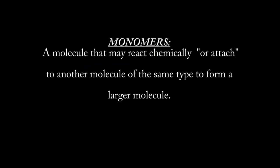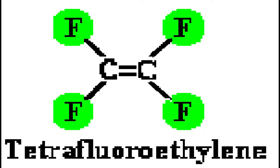The definition of a monomer is a molecule that may react chemically or attach to another molecule of the same type in order to form a larger molecule. An example of which being tetrafluoroethylene.